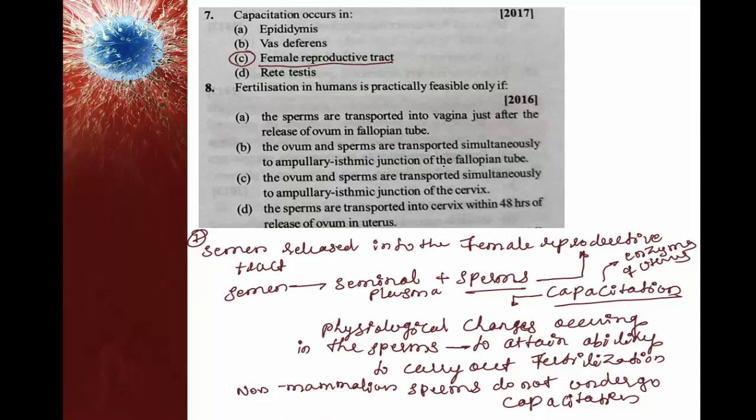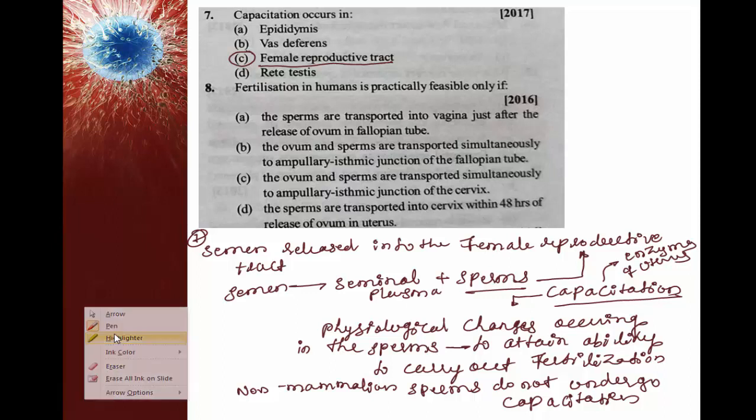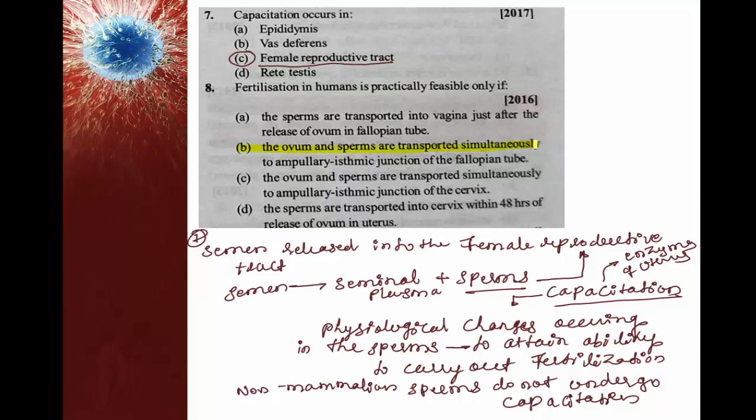If both gametes come into contact at the ampullary-isthmic junction, there is a chance of fertilization, because the ampulla is the wider part of the fallopian tube (oviduct). The fallopian tube has parts: infundibulum, ampulla, isthmus. The infundibulum ends with finger-like projections called fimbriae, which receive the egg when it is ovulated from the Graafian follicle. The correct option is option B.